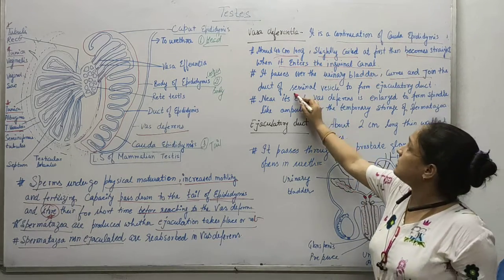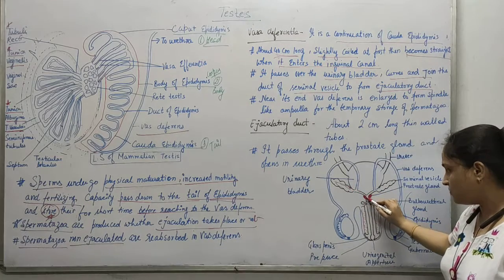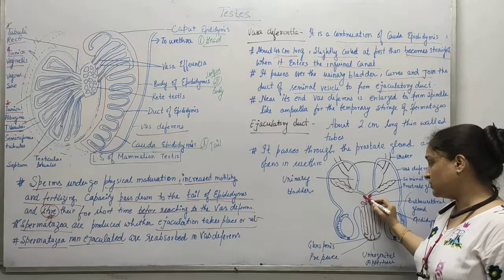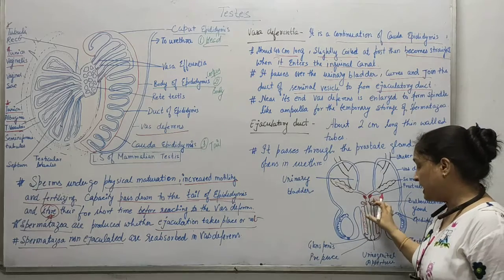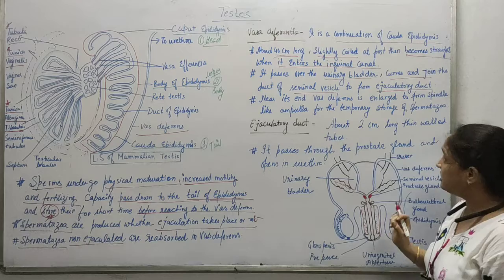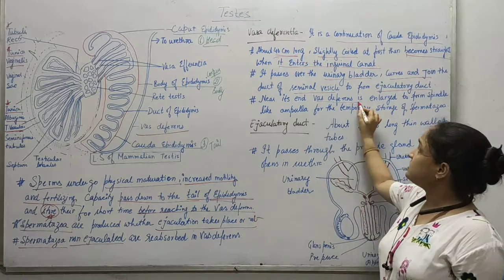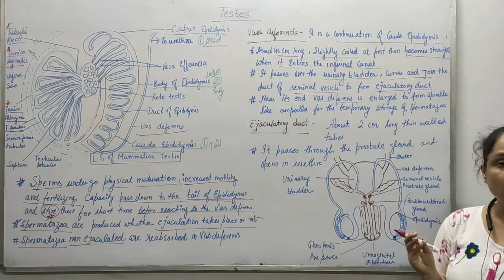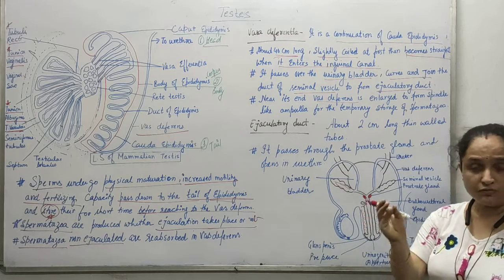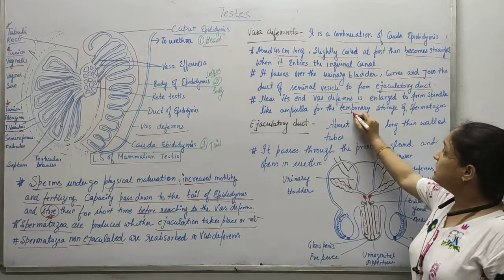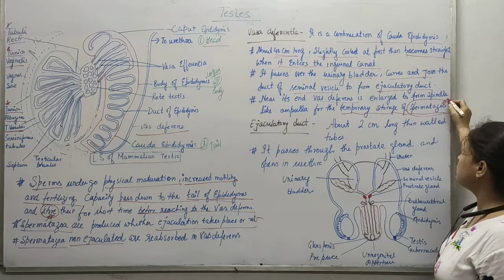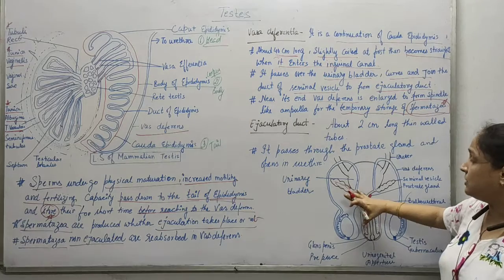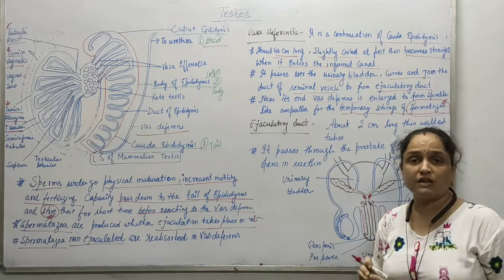The vas deferens joins the seminal vesicle — this structure here is the seminal vesicle — to form the ejaculatory duct, which is the small structure formed here. On both sides of this structure there is the prostate gland, which surrounds the ejaculatory duct. Near the seminal vesicle the vas deferens is enlarged, forming a sort of ampulla, which is basically a funnel-shaped, slightly enlarged region. There is a temporary storage of spermatozoa in this ampulla, the end part of the vas deferens.